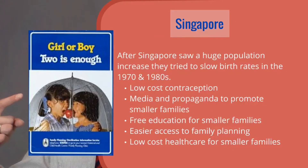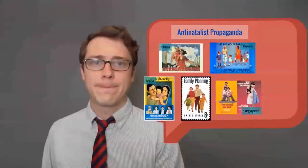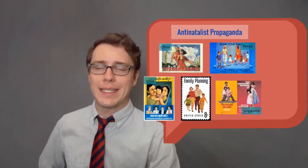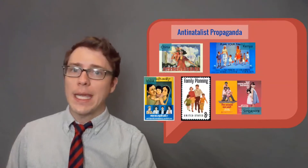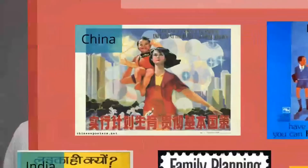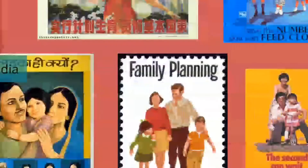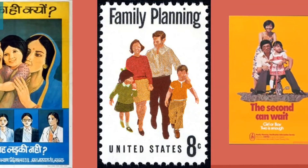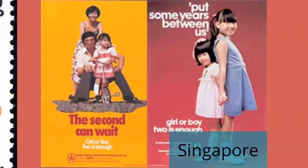There's another Singapore ad that says 'girl or boy, two is enough.' We see in many different countries people take on anti-natalist propaganda — remember, propaganda is just an advertisement the government puts out to try to change people's opinion. In China, we see a mom carrying her one child showing the ideal situation. Even in the United States, they made a stamp about family planning showing just two children, encouraging people to have two kids instead of more. Another Singapore ad says 'the second can wait — put some years between us; girl or boy, two is enough.'